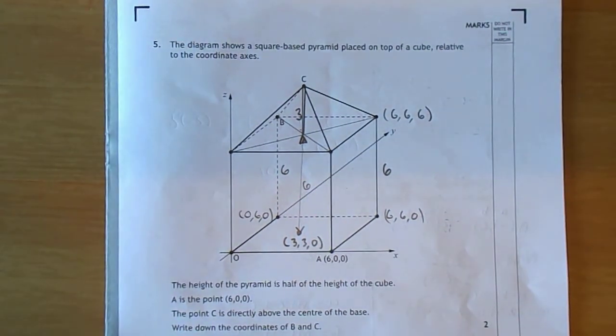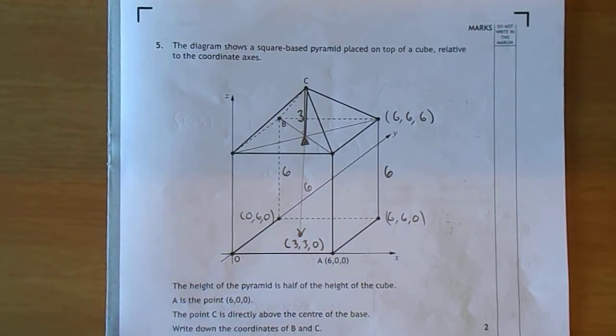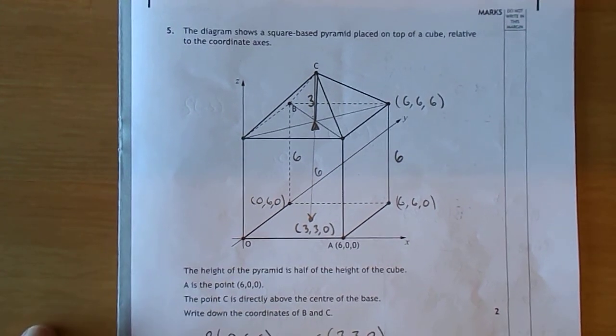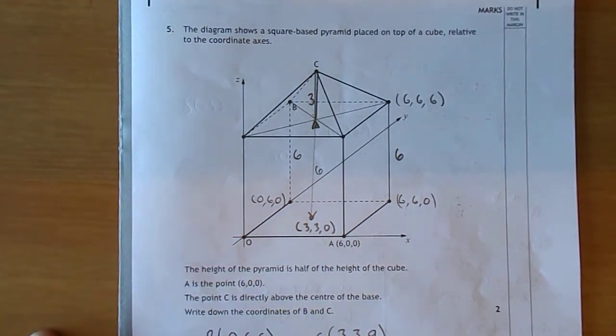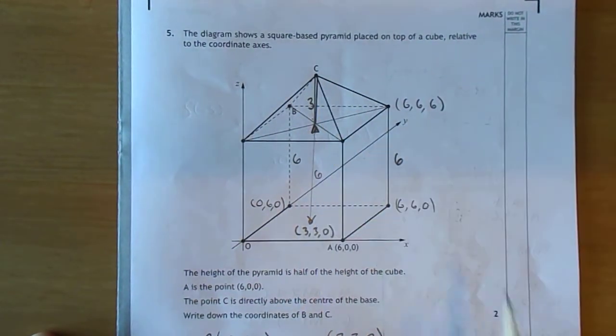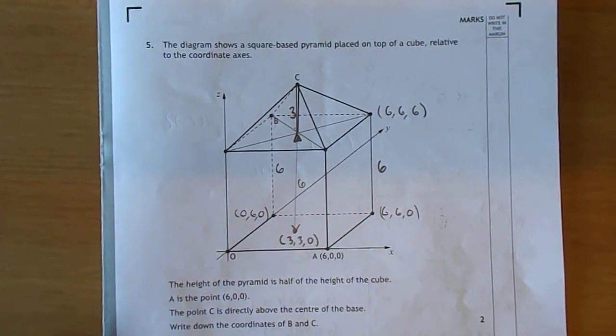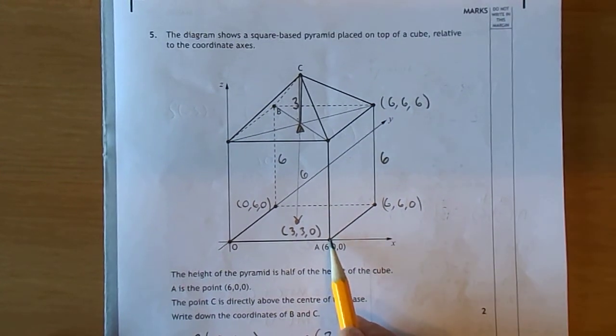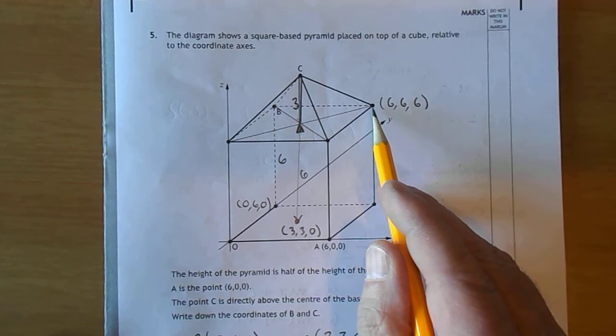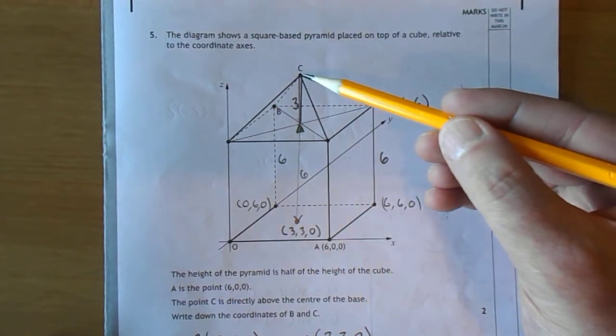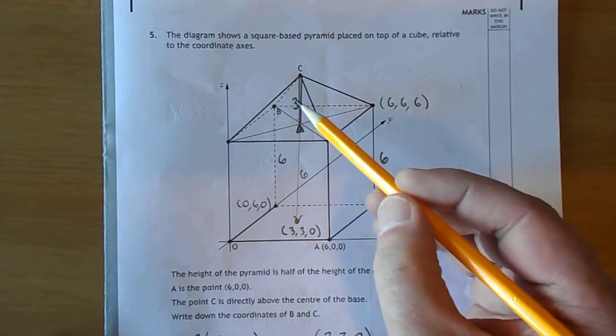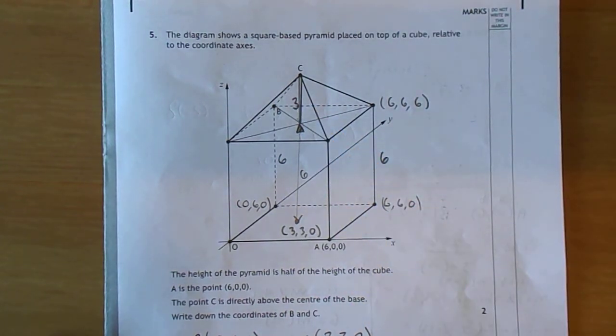Let's move on to question 5. Where you're presented with a pyramid on top of a cube. And you're asked to find the coordinates of 2 points on this shape. We're asked to get the coordinates of B and C. So let's have a quick look at this. Now A is the point 6, 0, 0. So that's telling you that the length of each side of the cube is 6. So that's 6. That's 6. That's 6. And it tells you the height of the pyramid is half the height of the cube. So hopefully you can see that I've just penciled in a little 3 there just to remind me.